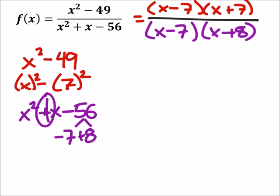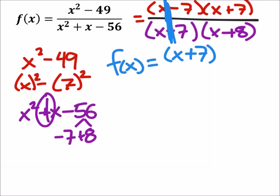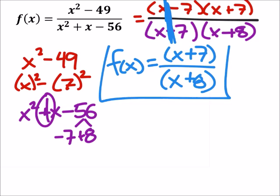Alright, this is great. Once again, we got an x minus 7 that's going to cancel out right here. And so what we're left with is f of x equals, we got an x plus 7 in the numerator. I guess I don't really need parentheses here, but I used them already. And then x plus 8 in the denominator. You can show the parentheses there if you want, but you don't have to.